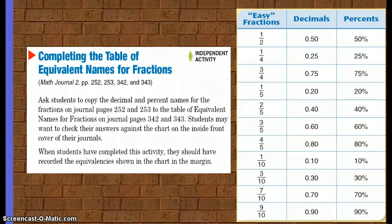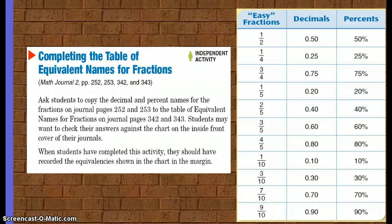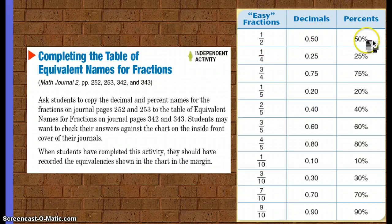Completing the table of equivalent names for fractions. So again, you're back into your math journal on pages 252 and 253. Names for fractions on journal pages 342 and 343. And you're going to want to check your answers against the chart on the inside front cover of your journal. So if you're looking, half is equivalent to 0.50 or 50 percent.